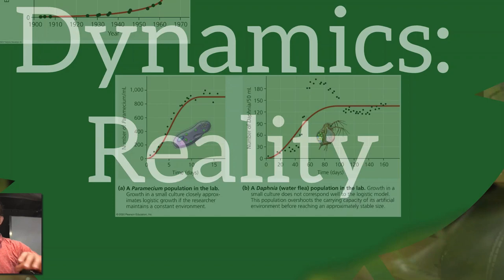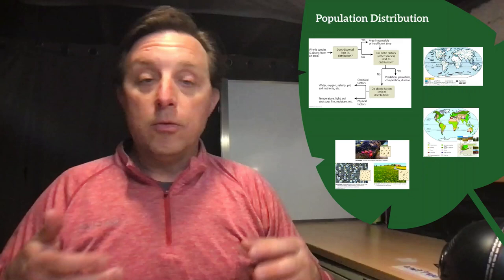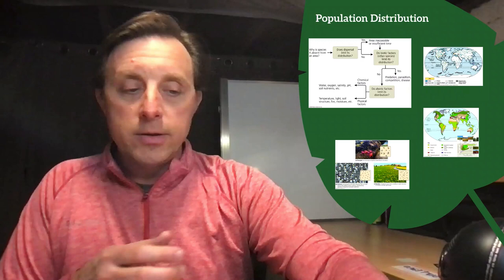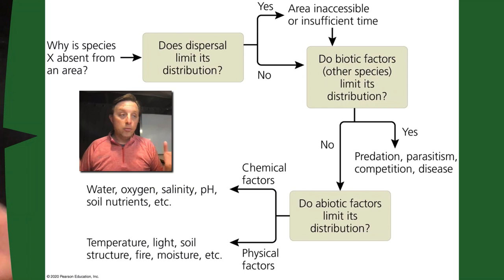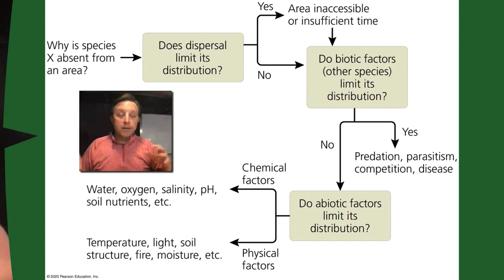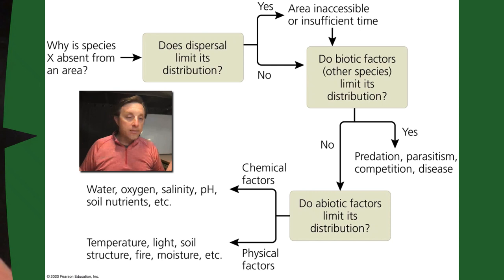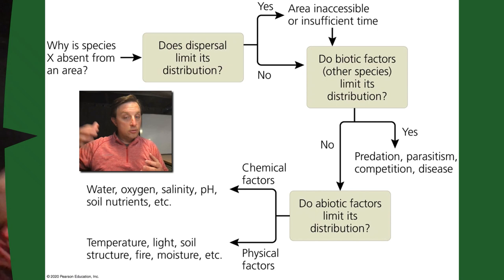Now, where are populations? What is their distribution? Researchers create flow charts asking why a certain species doesn't appear in a certain location. Once they get a yes answer, they continue asking, because all factors — abiotic, biotic, or dispersal limits — come into play. For example, seeds can't travel far enough for a plant, or animals can't cross to a certain island. That's why a species is not found there.